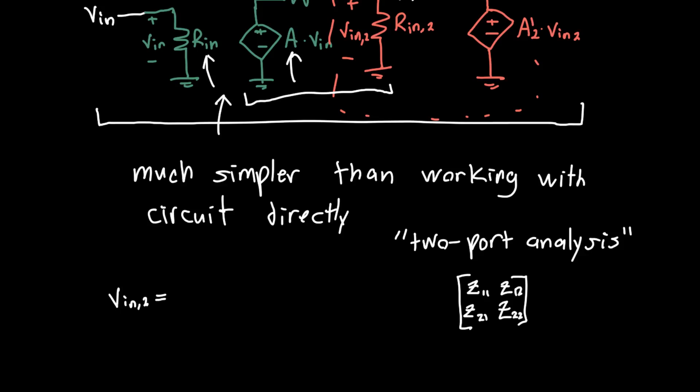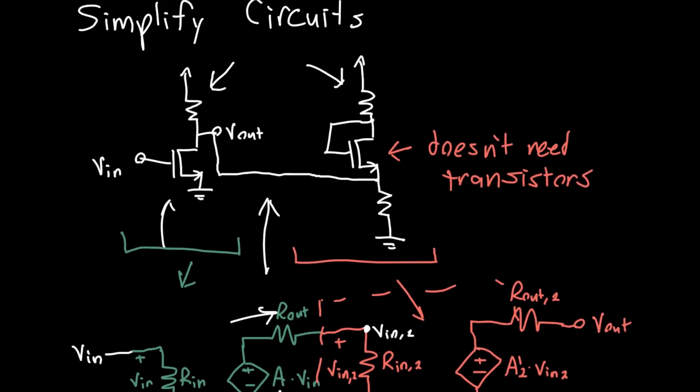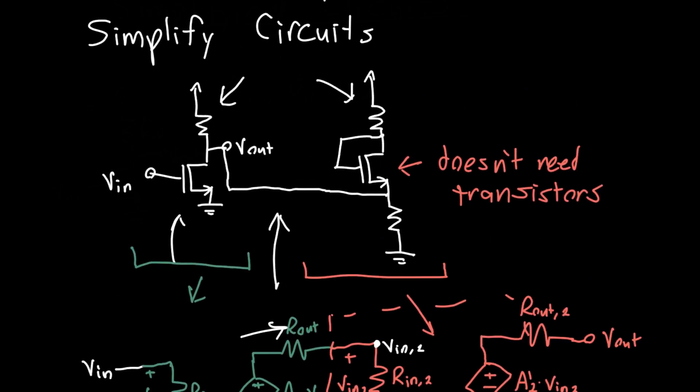So the input voltage of the second stage, V_in2, which is here, is just equal to, well, it's A times V_in times R_in2 over R_in2 plus R_out. And that's just a simple voltage divider.